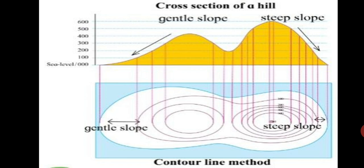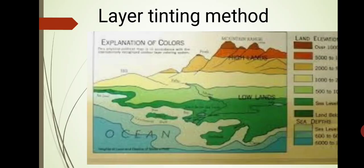This is how you can mark on a map using contour line method. Next, layer tinting method. This method is based on contour lines. In this method, the spaces between contour lines are filled with color. Each color indicates a specific height.